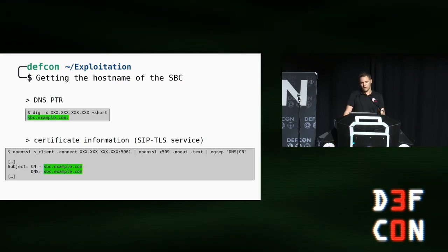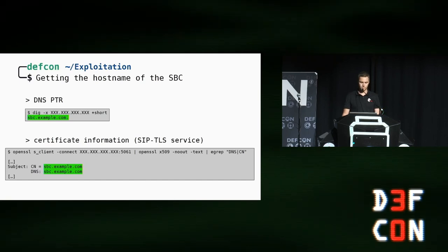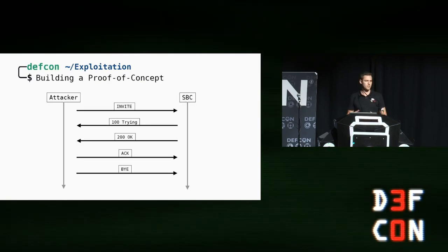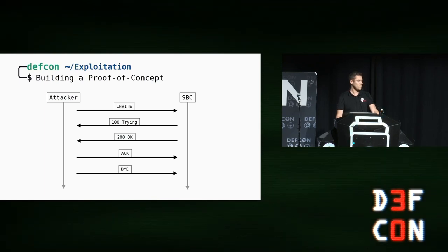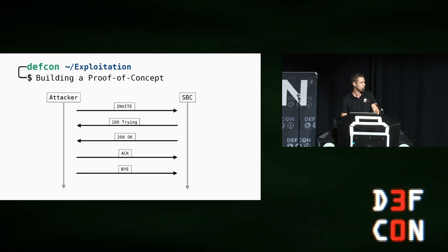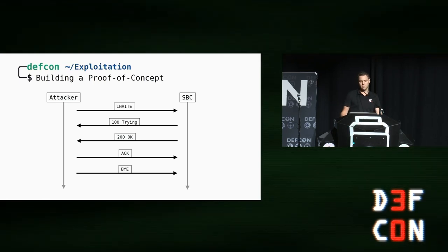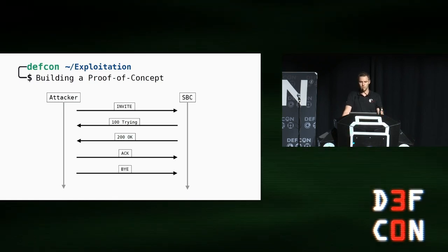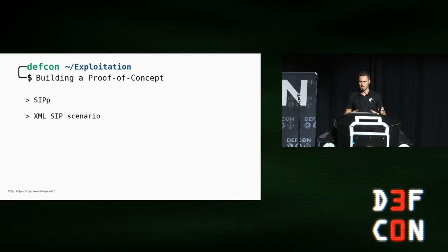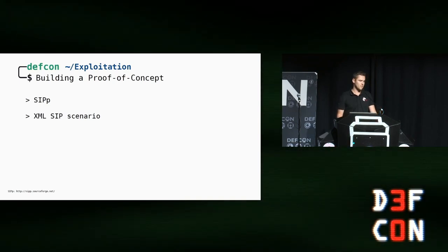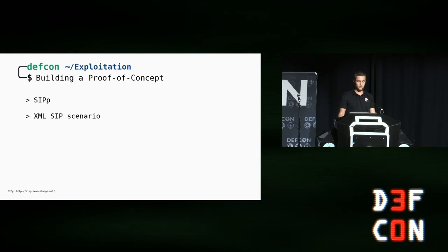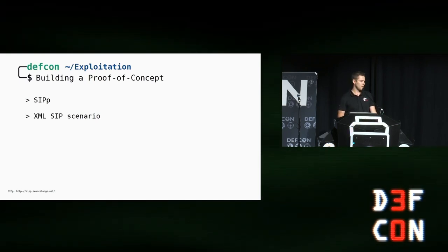So we have the hostname and now we have to define the SIP call flow for our attack. The idea is to send the SIP INVITE message to the SBC, and if the destination accepts our call, we will receive a 200 OK response. After that, we terminate the call by sending a SIP BYE message. Now we need a tool for handling this specific call scenario including all the required information. A tool which can be used for that is SIPP. SIPP is one of my favorite tools when it comes to SIP pen testing. It's actually not a hacking tool — it's a SIP testing tool to handle specific call scenarios and test your phone systems. These scenarios are defined in XML templates and are highly flexible.